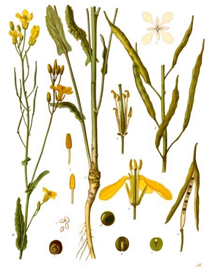Siberian kale is a distinct leaf-rape-form variety B. napus var. pabularia, which used to be common as a winter annual vegetable. The second subspecies of B. napus is B. napus subsp. rapaphera, also subsp. napobrasica, the rutabaga, swede, or yellow turnip.